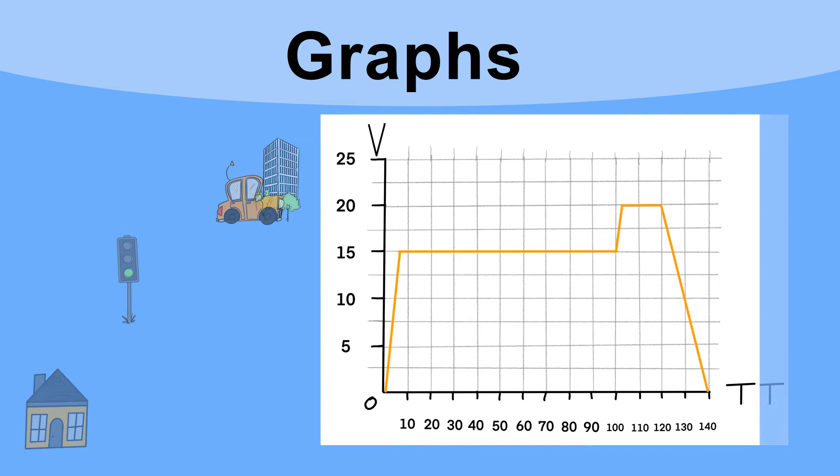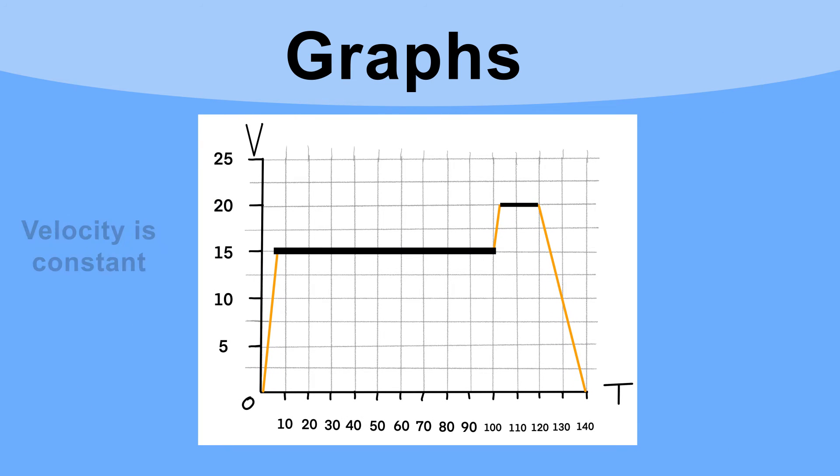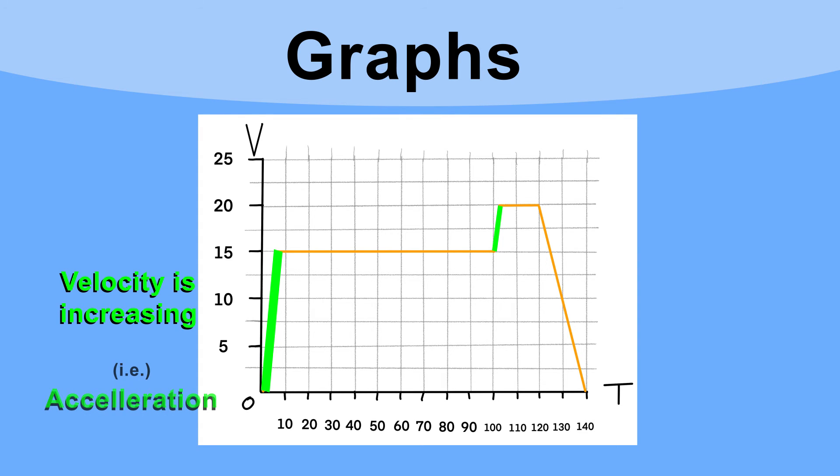So what can we see from this graph? Well, a flat line here means the velocity isn't changing, so the car's moving at a steady speed, a steady velocity. When the graph does increase, it means the velocity is increasing every second, or the car's accelerating. And again, we can calculate that.